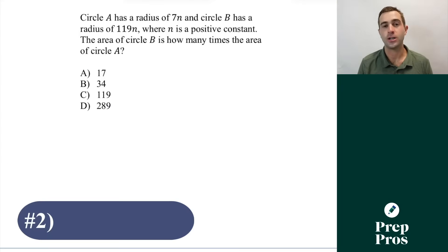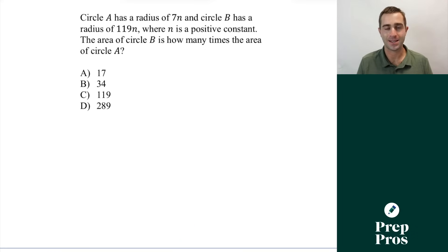The next thing you're going to see are scale factor questions. Your scale factor is always going to be how many times greater a corresponding radius, side length, or diameter is of shapes. Here we see circle A has radius of 7n and circle B has radius of 119n, where n is a positive constant. Our scale factor is going to be equal to 119n over 7n, so our scale factor is 17.